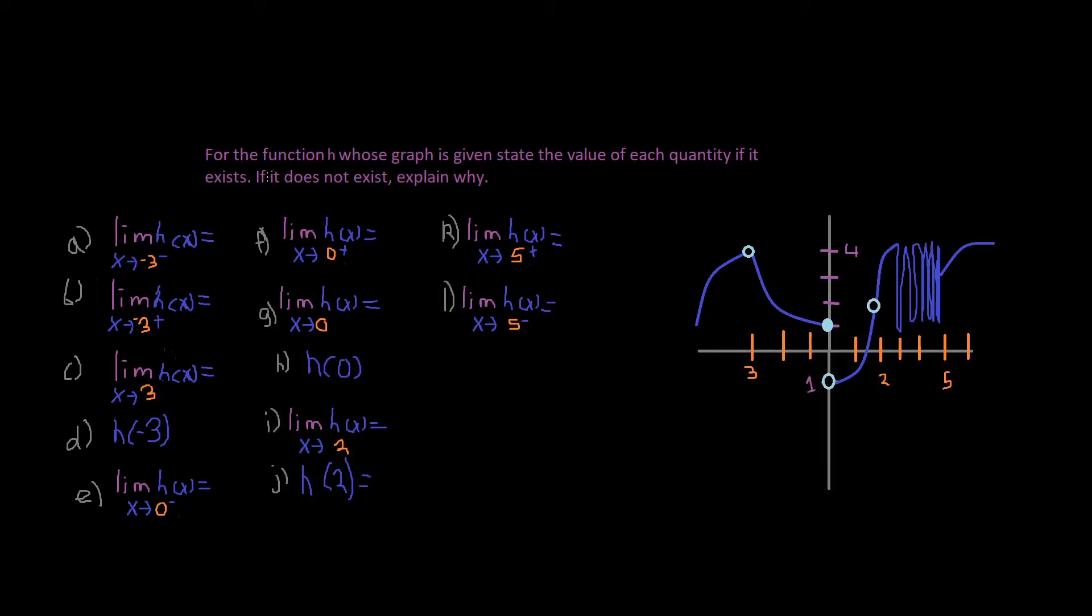Alright, so here's the next example. For the function h whose graph is given, state the value of each quantity if it exists. If it does not exist, explain why.